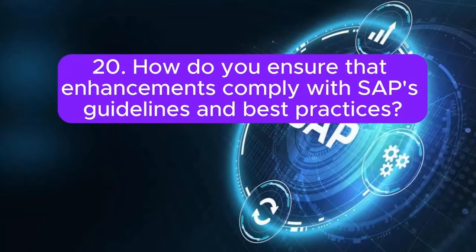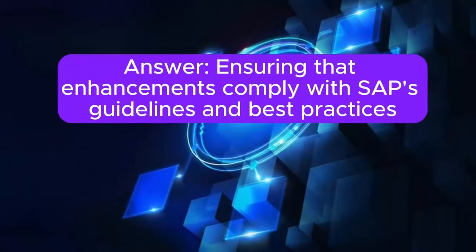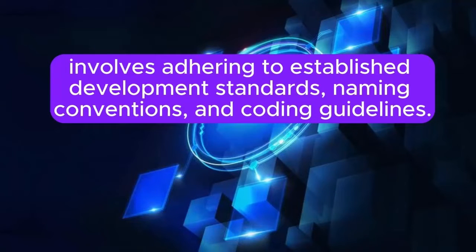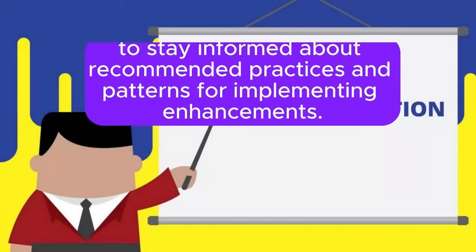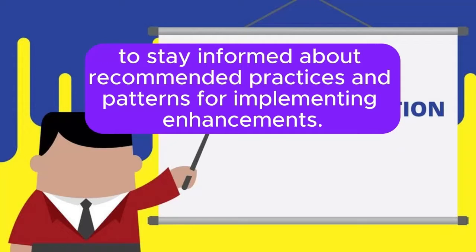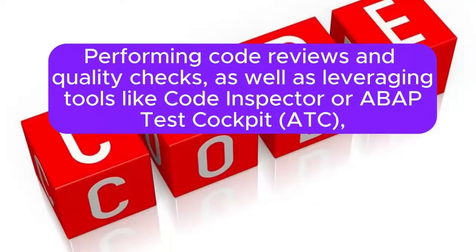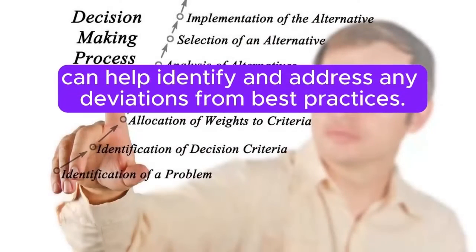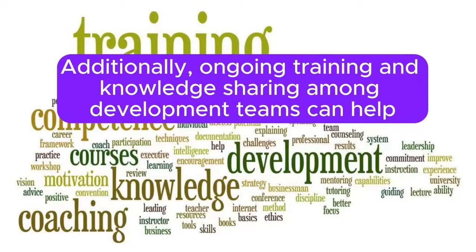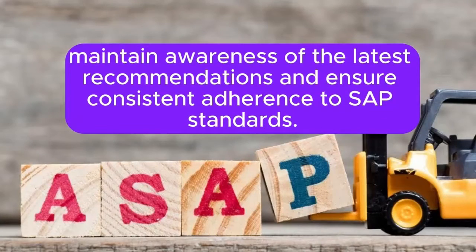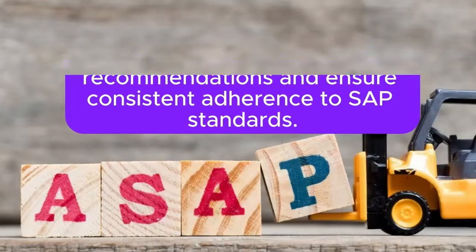How do you ensure that enhancements comply with SAP's guidelines and best practices? This involves adhering to established development standards, naming conventions, and coding guidelines. Leveraging SAP's documentation and resources such as the Enhancement Guide and SAP Community helps stay informed about recommended practices. Performing code reviews and using tools like Code Inspector or ABAP Test Cockpit (ATC) can identify deviations. Ongoing training and knowledge sharing among development teams also ensures consistent adherence to SAP standards.